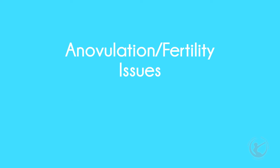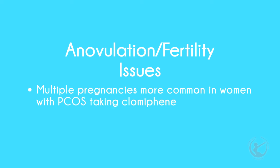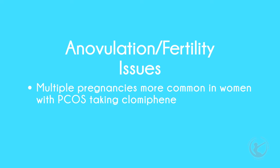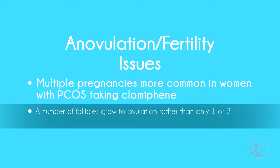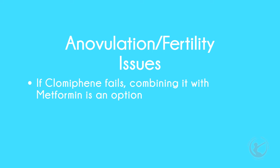Anovulation or fertility issues: anovulation may be managed with drugs to induce ovulation. This includes clomiphene or injectable hormones to stimulate the ovaries. Weight loss also helps. Multiple pregnancies with their own set of problems are more common in women with PCOS, as clomiphene cannot selectively get one or two follicles to ovulate, so a number of them can grow to ovulatory size. These patients also have a higher risk of developing ovarian hyperstimulation syndrome. Metformin taken with clomiphene may be tried if clomiphene alone fails, and the combination may also help women with PCOS ovulate on lower doses of medication. Assisted conception methods — IVF and IUI — may also be used.